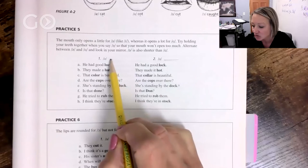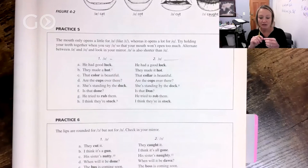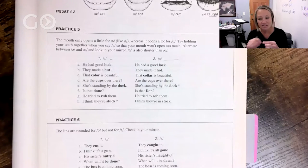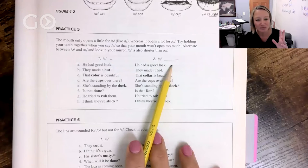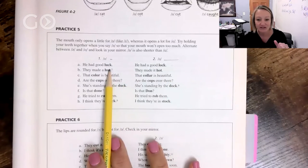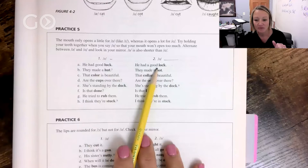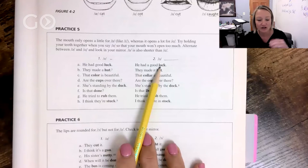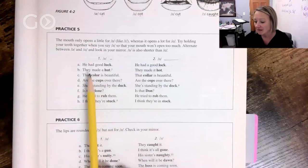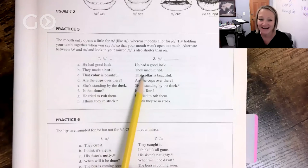Try to keep this like a little bit longer of a sound and this one's shorter. So uh, ah. It's not super long, it's more like medium but this one is definitely short. He had a good luck, he had a good lock. But because your mouth goes open so far here, you actually have to make it a little bit longer. They made a hut, they made it hot.